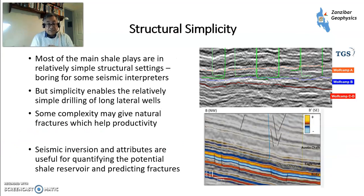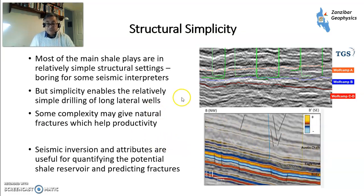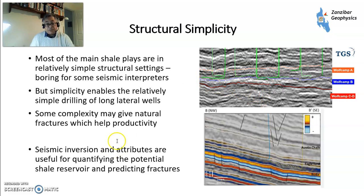Structural simplicity also helps. You really don't want things to be very complicated — no heavy faulting, folding, thrusts, or salt diapirs within the play. You just want something simple and boring, like these straight reflectors from the Eagleford and the Permian Basin shown here from TGS data. You need reasonable simplicity to be able to do your horizontal wells. If you have a lot of complexity, drilling becomes more difficult and you may not have space for your laterals, although some fractures can help with productivity.